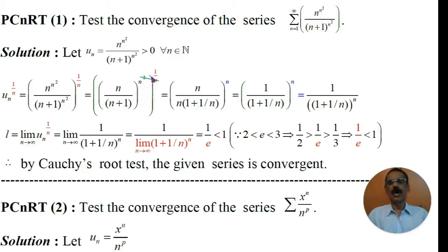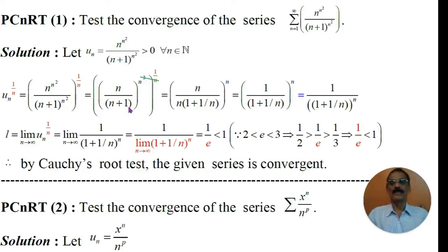Now, the power is 1 by n, and we have n squared, that is n into n. Therefore, 1 and n get cancelled, giving n divided by n plus 1 to the power n. Now, in the denominator, we take n out. Therefore, it becomes n divided by n into 1 plus 1 by n to the power n. Then n and n get cancelled, giving 1 divided by 1 plus 1 by n to the power n.